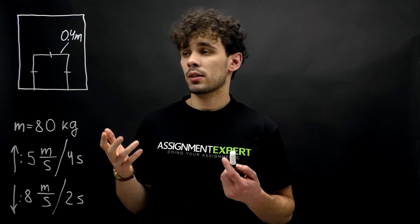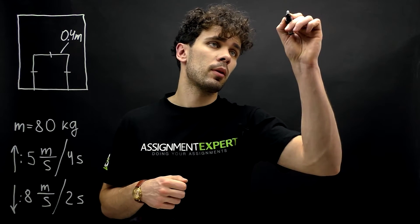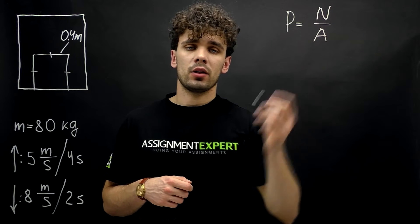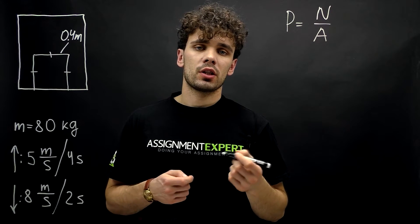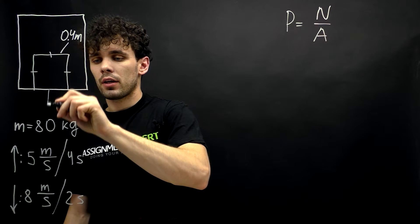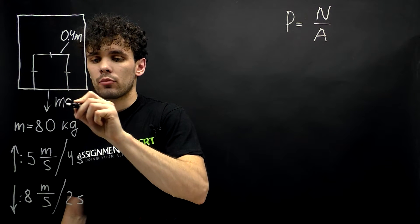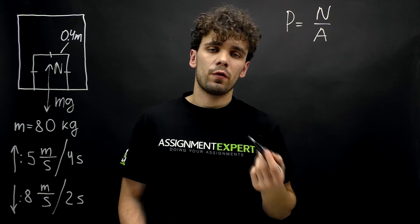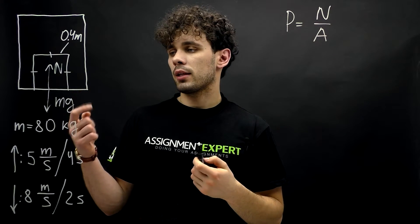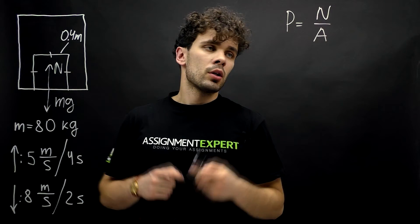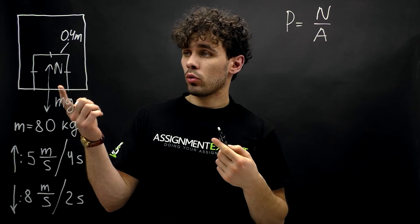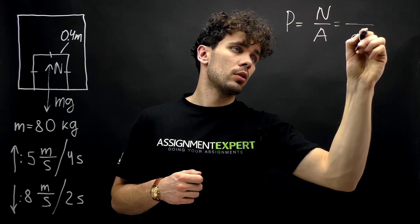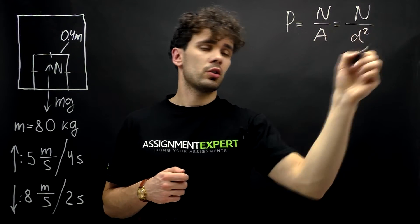To start, let's recall that pressure P equals N over A, where N is the normal force. The normal force is a counterforce to the force of gravity — if gravity acts downward and equals mg, the normal force acts upward. A is the surface area of the object pressing on the surface. For our cube with equal sides, the surface area is d squared. That is the formula we will use.